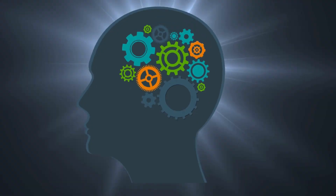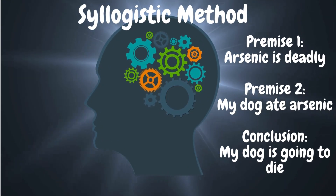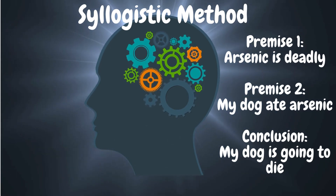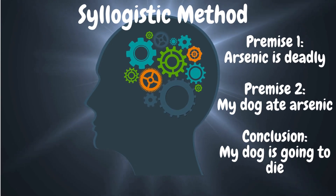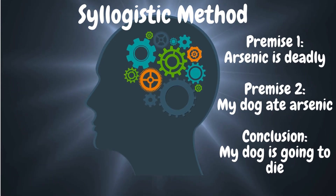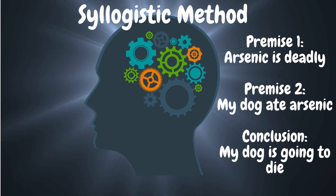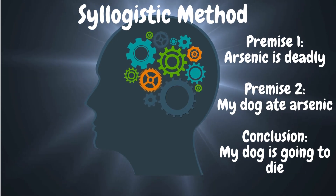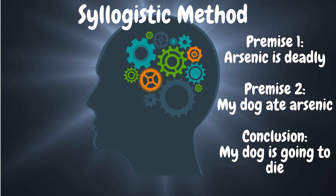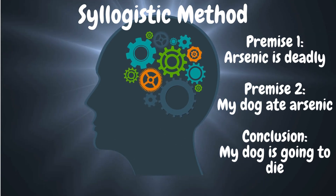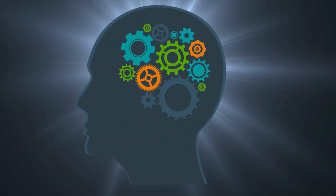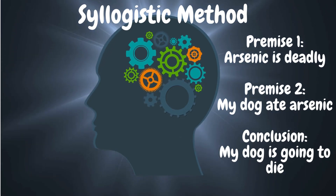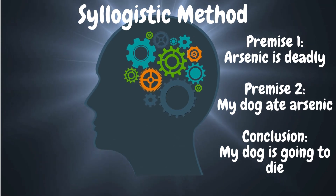For example: in my first premise, 'arsenic is deadly' — you'd nod and agree. If I follow it with a second premise, 'my dog ate arsenic,' you are naturally going to conclude that my dog is going to die. That's syllogistic logic. When you think on paper, this is how your argument needs to be packaged — lockstep, bulletproof logic.